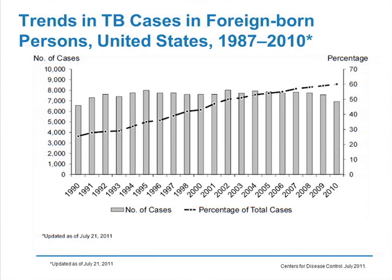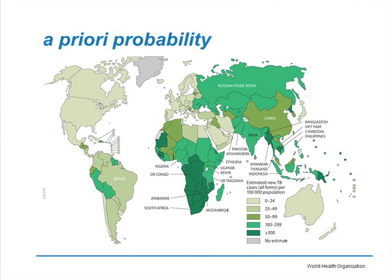Here's worldwide TB epidemiology — I've labeled this slide 'a priori probability.' A lot of the interpretation of screening assay results has to do with the patient's a priori probability: their baseline probability of being infected with TB. If you come from North America, Western Europe, or Australia, the rates are very low — generally below 20 to 24 per 100,000.